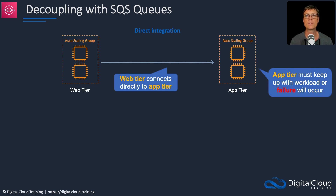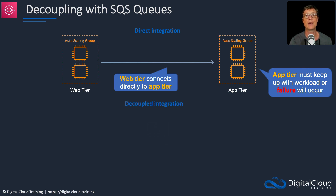What happens if your application suddenly gets a massive burst in traffic and the app tier is unable to process the data fast enough? Well, it simply fails, the data gets lost, and you lose whatever that information is — could be orders, could be something critical to your business. We can solve these issues with a decoupled integration.